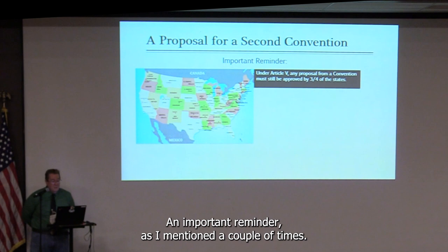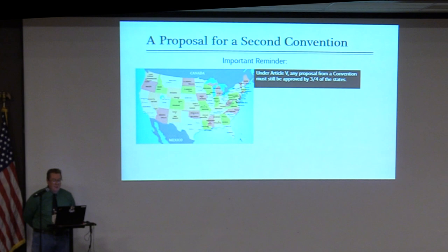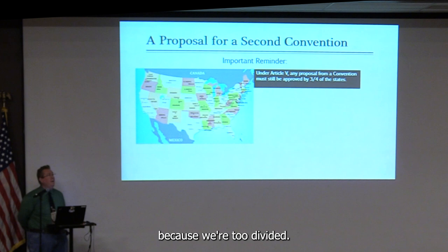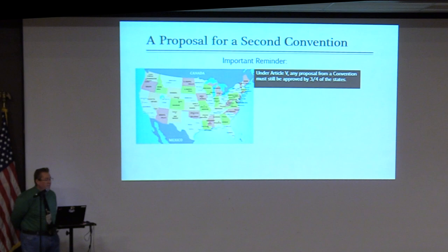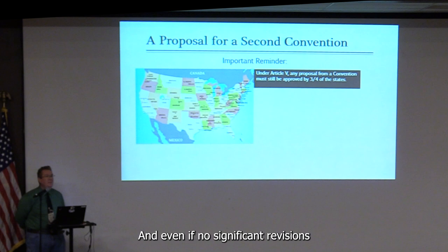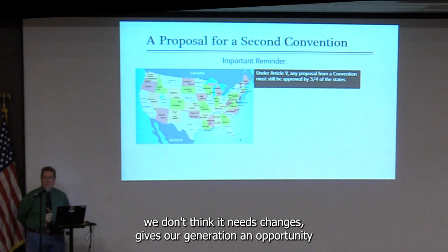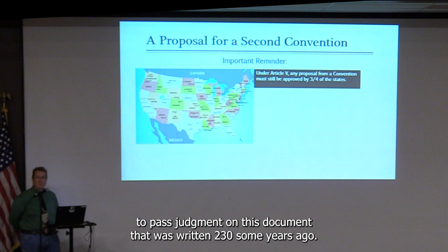An important reminder: anything coming out of such a convention must be approved by three-quarters of the states — that back wall remains. As for the argument that we're too divided to hold a convention, this process of examining our founding document could itself be a unifying process — one that brings us together to ask how we want to live with one another peacefully. Even if no significant revisions were made, just the process of saying 'we looked at it and don't think it needs changes' gives our generation an opportunity to pass judgment on a document written 230-some years ago. The process of holding a convention has value in itself.